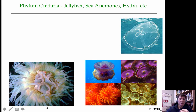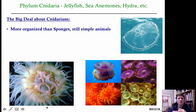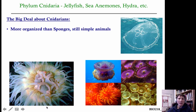The major big concept we cover with cnidarians is that these are organisms that are a few steps beyond sponges — they're more organized. 'Advanced' is probably not the best word, but they have more complex systems than sponges do, and yet they're still quite simple animals.